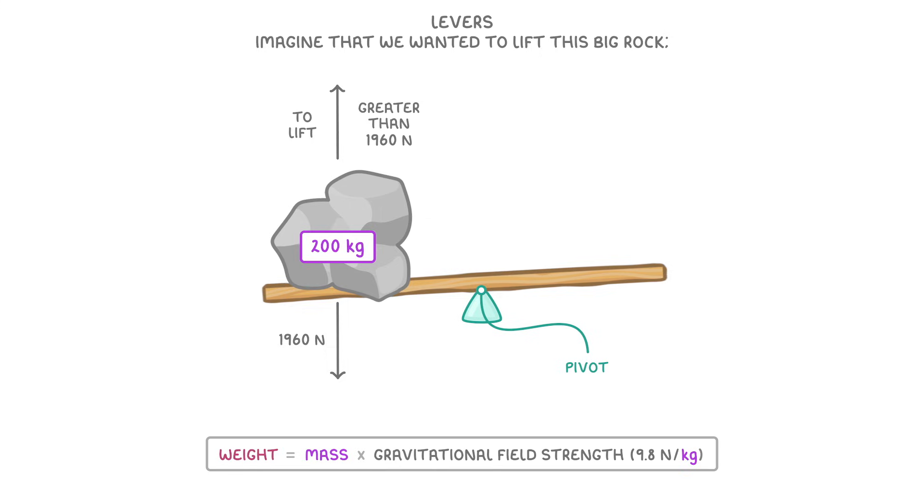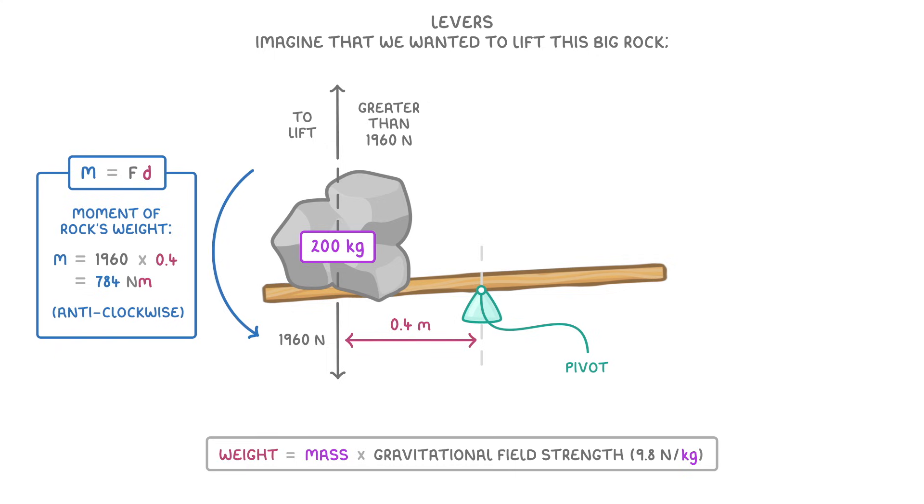If the distance between the pivot and the rock was 0.4 meters, then by using our equation, we can work out the moment of the rock's weight, which would be 1,960 times 0.4, so 784 newton meters, and this would be an anti-clockwise moment around our central pivot. This means that all we have to do to lift the rock is generate a clockwise moment that's greater than 784 newton meters.